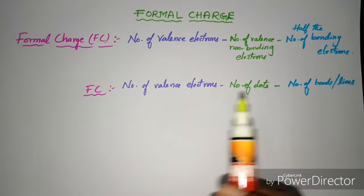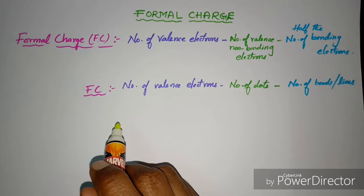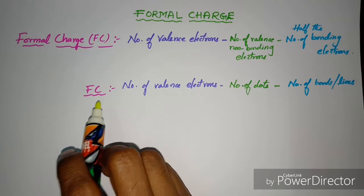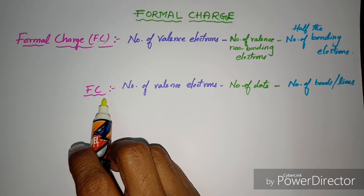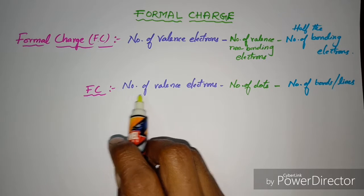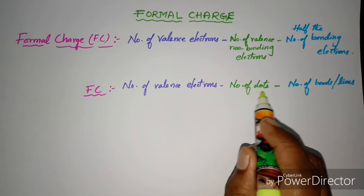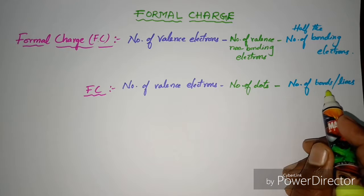The other way, if you know how to draw Lewis dot structures: the formal charge is calculated as number of valence electrons minus number of dots minus number of bonds or lines.